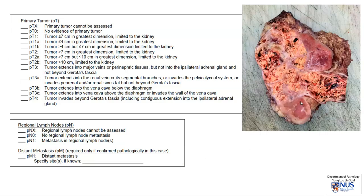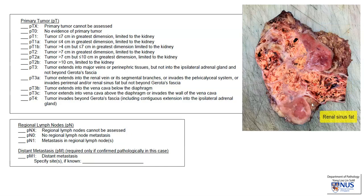In the gross assessment, we can see a tumor in the kidney. To orientate you: this is what's left of the upper pole, this is the region of the renal pelvis, and this is a very large vessel — the renal vein. This little area here is the renal sinus fat, and this is the lower pole of the kidney. This is the capsule of the kidney and the perinephric fat.